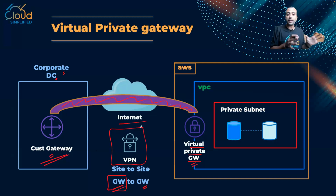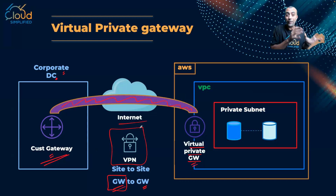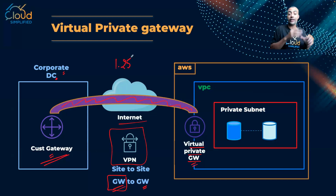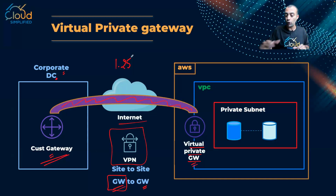However, as you can see, I am using the internet, and this VPN tunnel cannot reach very high speeds. At the time of recording, the VPN maximum speed is 1.25 gigabits per second. So what if I need to send a huge amount of data — for example, during a migration? That's where the second option of connectivity comes in.